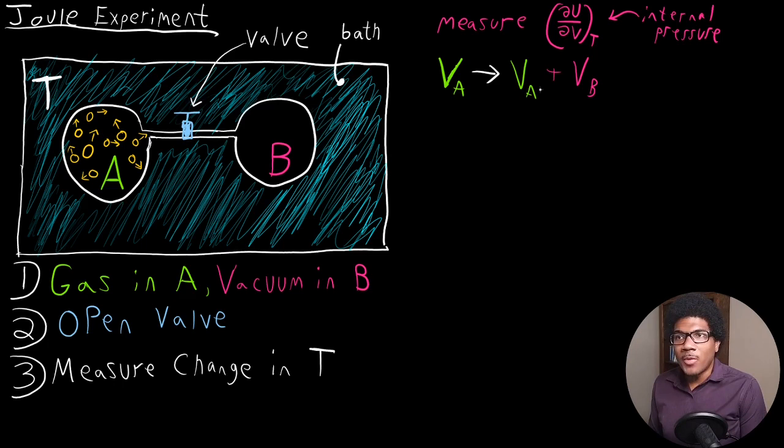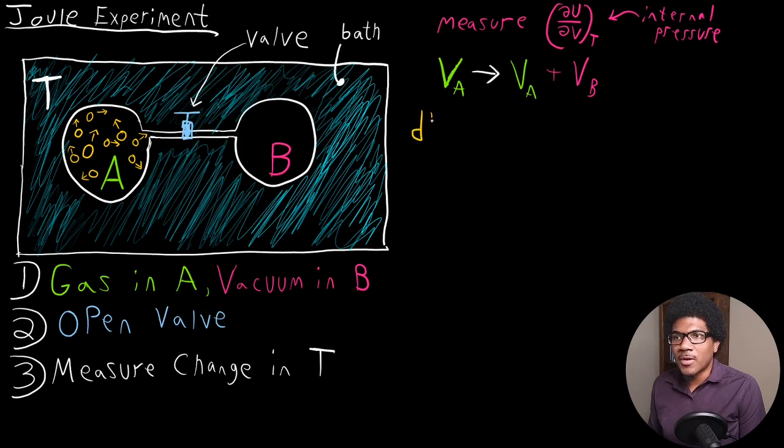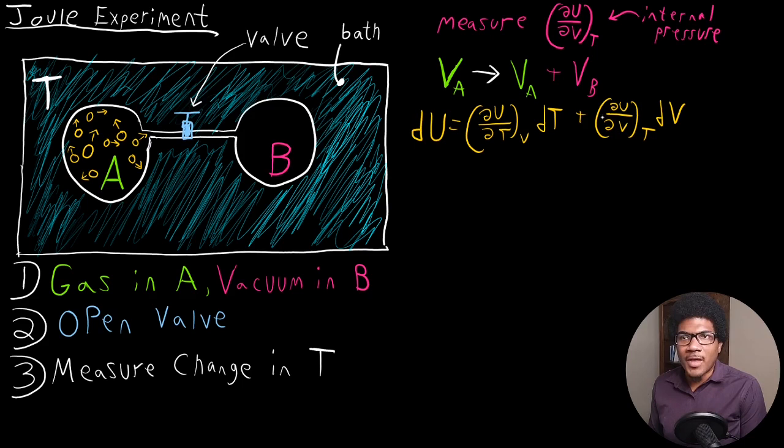So now we got to think, we've done this expansion. How does this relate to the internal pressure? Well, if you think about two equations that you can get for dU, we can make sense of this. First we have the total differential of dU. So we know that dU is equal to ∂U/∂T at constant V times dT plus ∂U/∂V at constant T times dV.